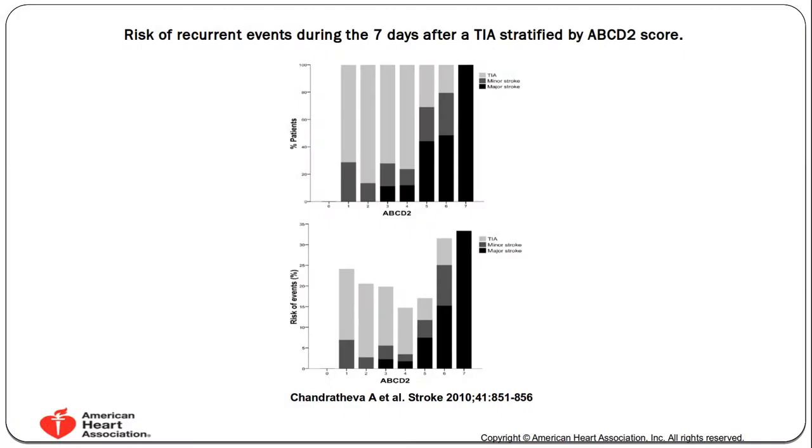Another possibility is that the ABCD squared score doesn't predict an event, but shows that a higher score means a more severe stroke if an event does occur. The bottom graph shows the incidence wasn't really that different depending on score, but the top graph shows the darker lines — major strokes — increased with higher scores. The bottom line is there are significant limitations to the ABCD squared score, to the point where current guidelines don't really recommend using it.